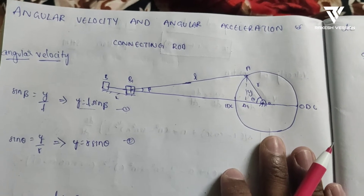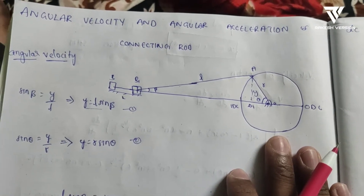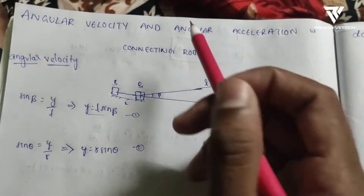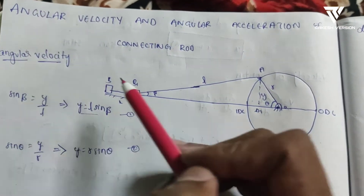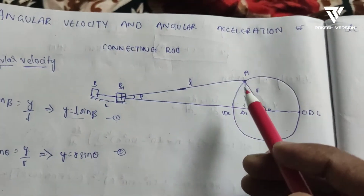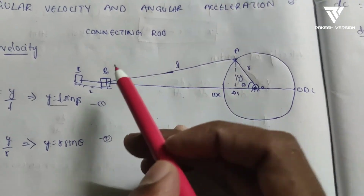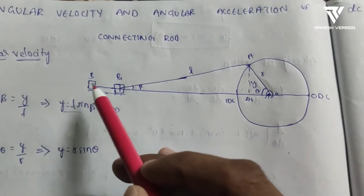In this video we are looking at angular velocity and angular acceleration of the connecting rod. First we need to draw the figure by locating the relevant points.